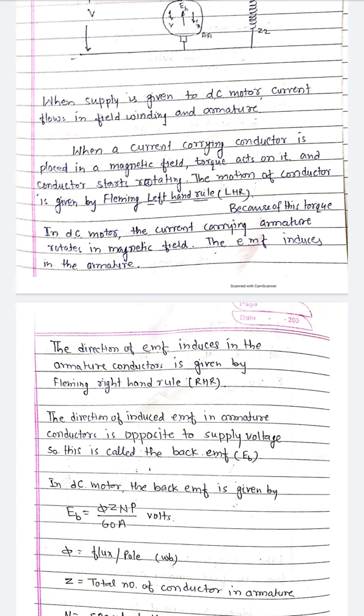In DC motor, the back EMF is given by EB equal to phi ZNP upon 60A volts, where: